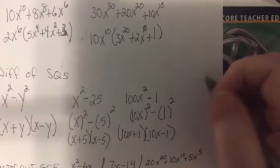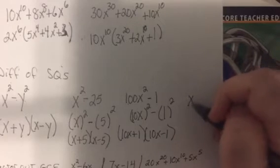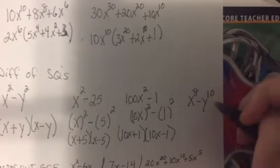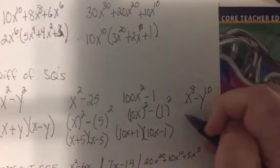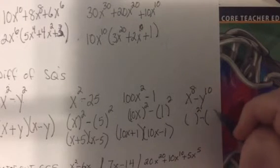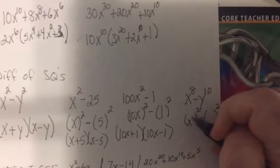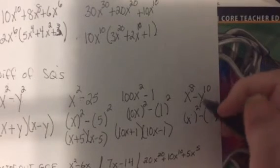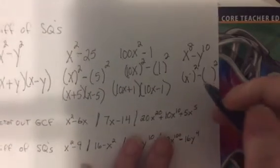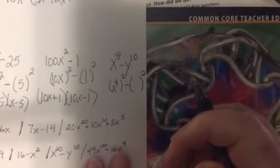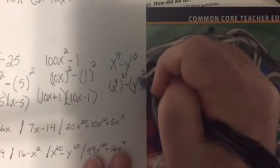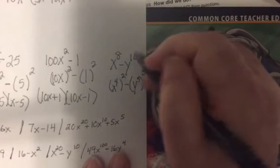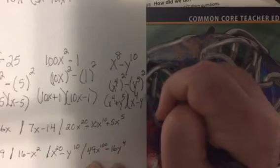So let's say I have x to the 8th minus y to the 10th. Well what is square? Well if you remember, when you raise something to a power then raise it to another power you multiply. So really the question is what times 2 is 8? And hopefully you see it's 4. Why is that dark over there? We'll bring it over here. And then this would be what do you multiply by 2 to get 10? And that's 5. So it'd be x to the 4th plus y to the 5th, x to the 4th minus y to the 5th.